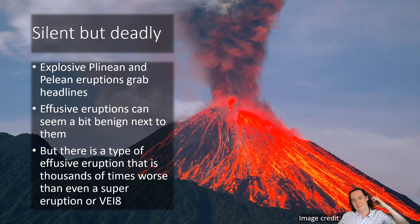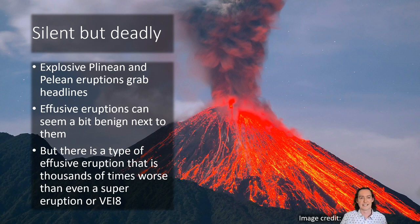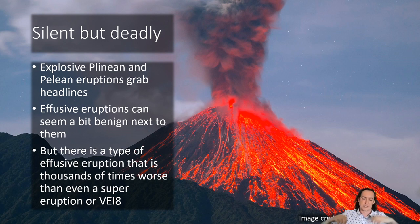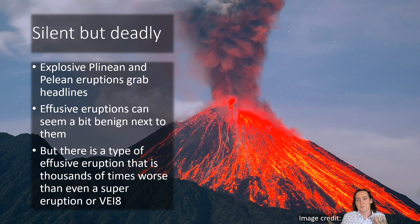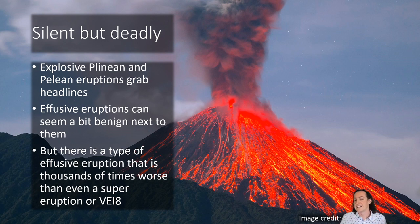The headline-grabbing volcanic eruptions are things like Plinian and Pelean eruptions that are massively explosive, producing huge ash columns and pyroclastic density currents that are incredibly devastating. You can't outrun a pyroclastic density current, so people tend to worry about them a lot more. Whereas effusive eruptions can seem a bit unremarkable by comparison — lava flows destroy everything in their path, but you can walk away and outrun them pretty simply. So it's kind of ironic that possibly the most devastating type of eruption is an effusive eruption.